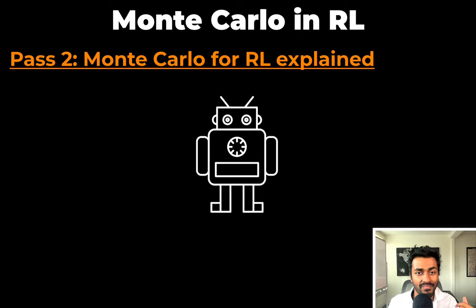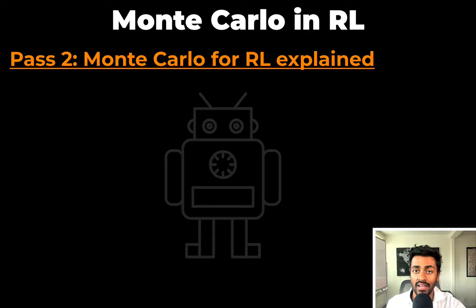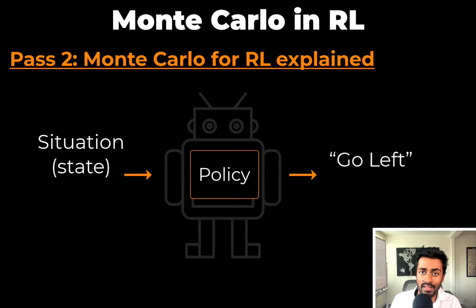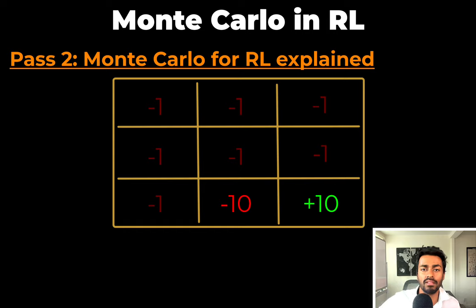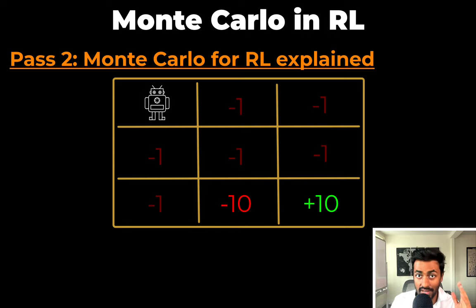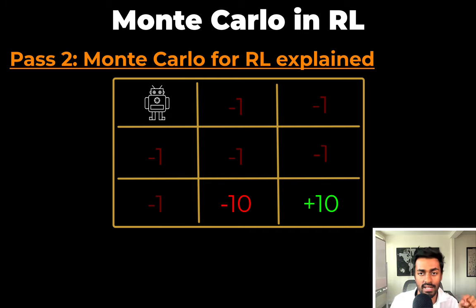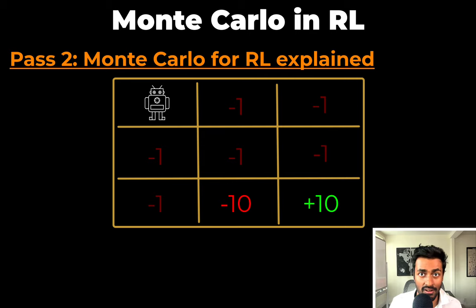This is Frank, our trusty robot. Frank is going to take actions based on its policy. It's good that Frank can make decisions, but how is Frank making these decisions and how good are they? An intuitive way to look at this is to put Frank in a grid-like world where rewards are written in the squares. Wherever Frank starts, the goal is to get to the plus 10 spot without incurring too many negative ones along the way. We'll use Frank to intuitively describe the Monte Carlo method.